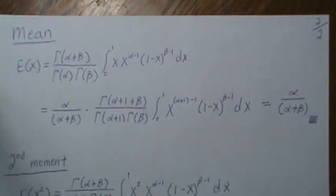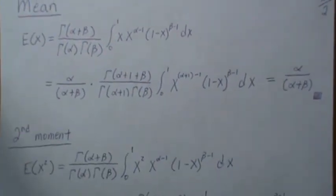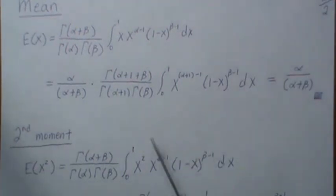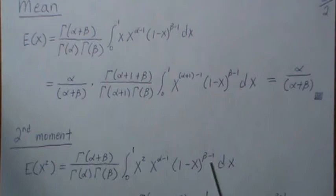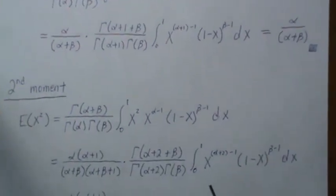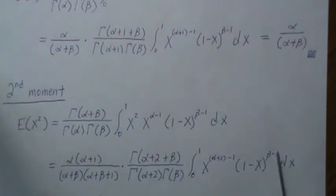The second moment is a similar approach. To find the second moment, we put X squared in here and then integrate over all possible values, zero to one. We take that X and put it in here, and then we make this look like another beta distribution.